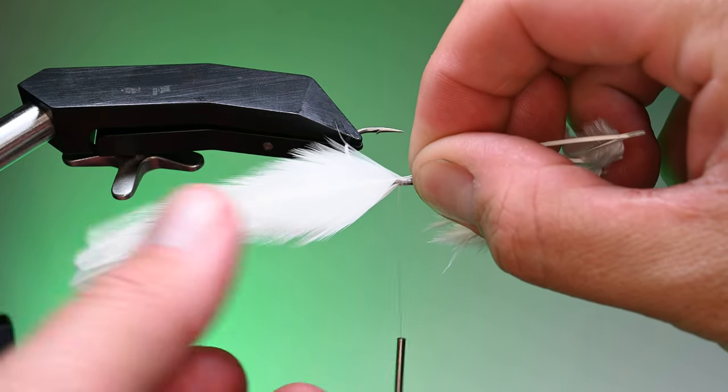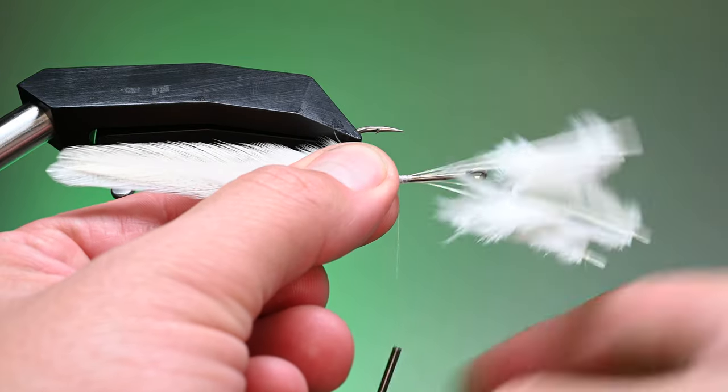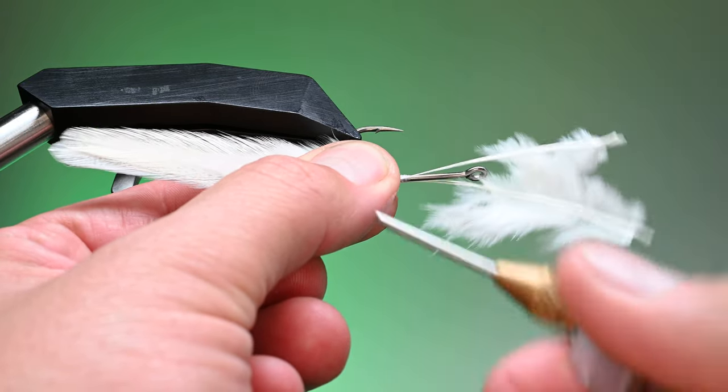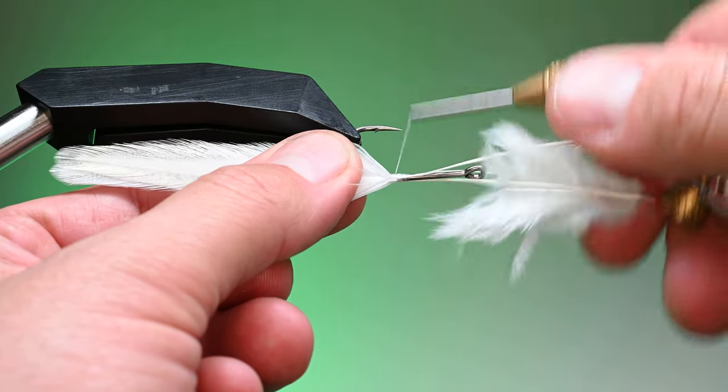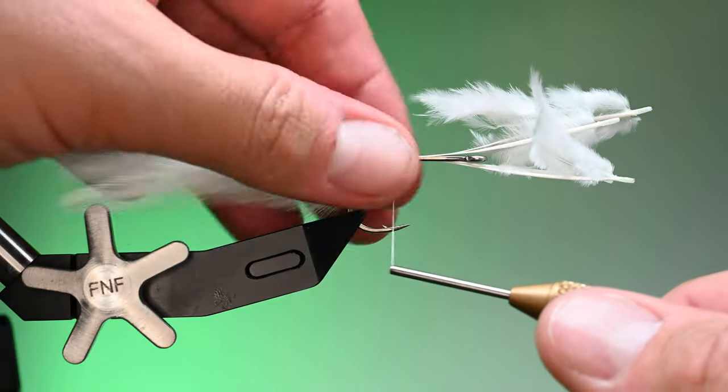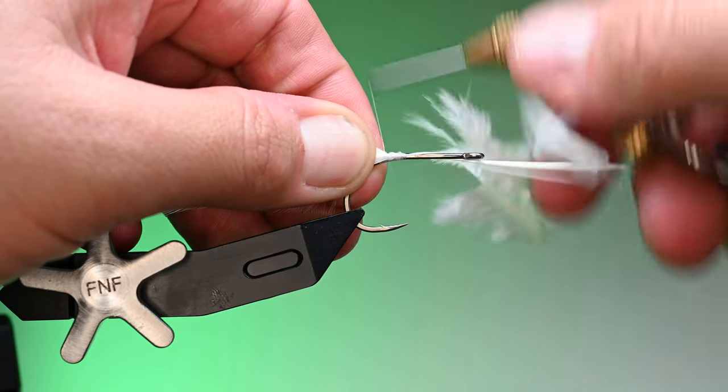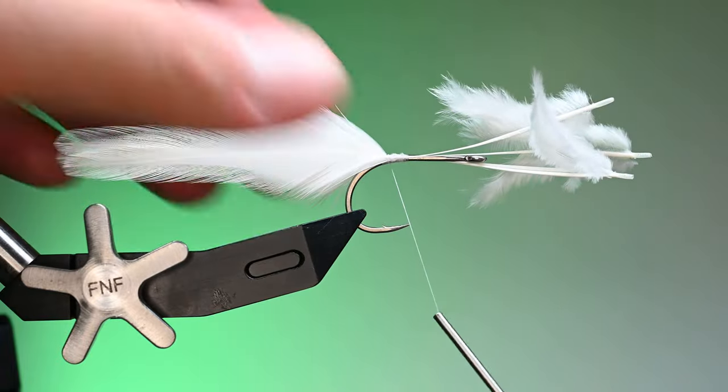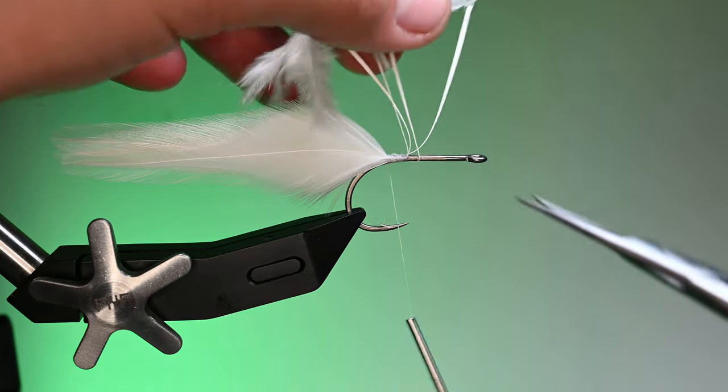I'm going to take the two feathers from the other side that I had already prepped. I'm going to match up the tips in length and tie that in on the opposing side with about three or four wraps working my way forward. Then we'll go backwards and check to see that we like the length. The tips are aligned, so I'll pinch them on each side and advance back a little bit over those fibers, and that will cause them to really stick up against each other.